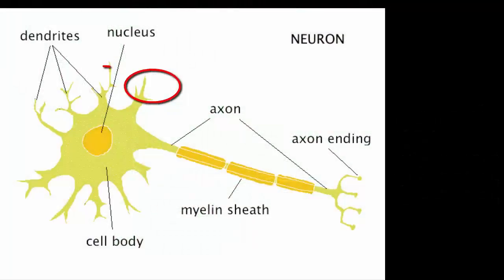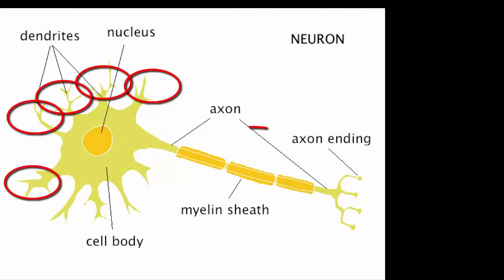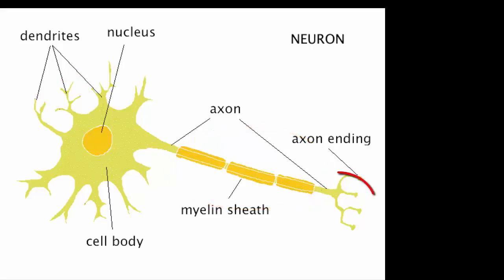Signals come into a neuron from other neurons, which triggers that neuron to fire its own signal along its outgoing axon. This axon can branch off into thousands of axons to send signals to other neurons. This is a neural network.